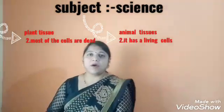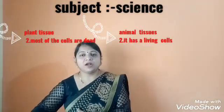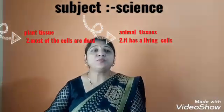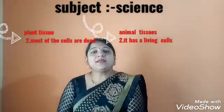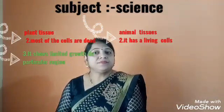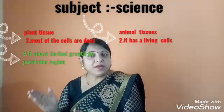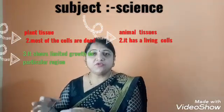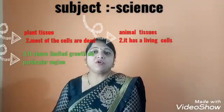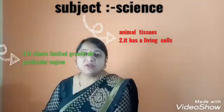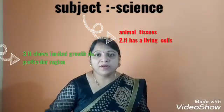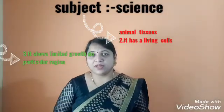Third point of plant tissue: it shows limited growth. There is limited growth for a particular region only. So in plant tissue, growth is limited to a particular region.